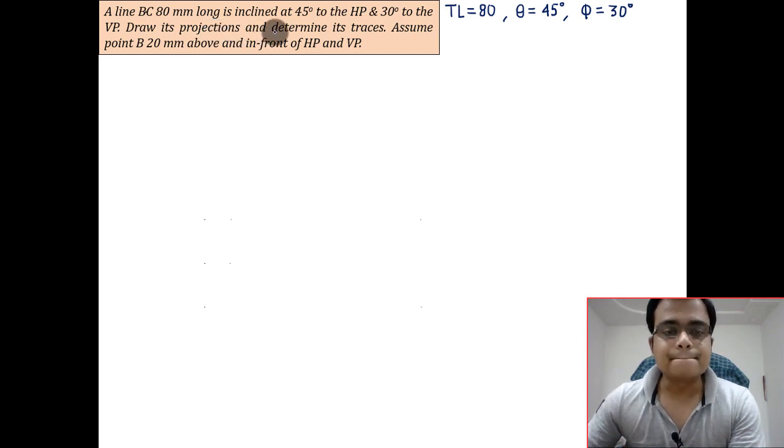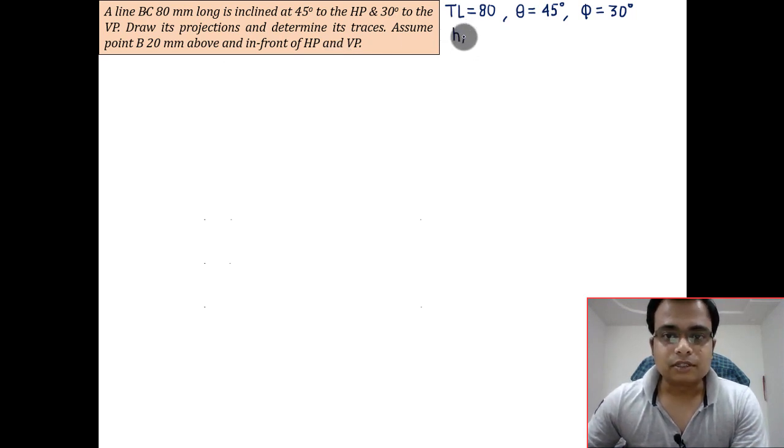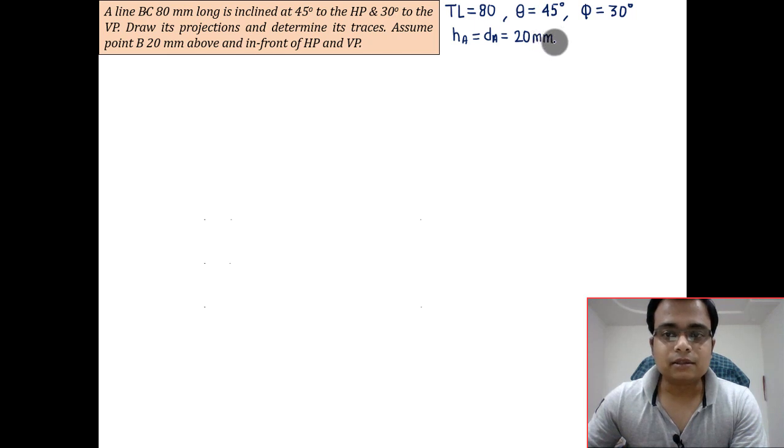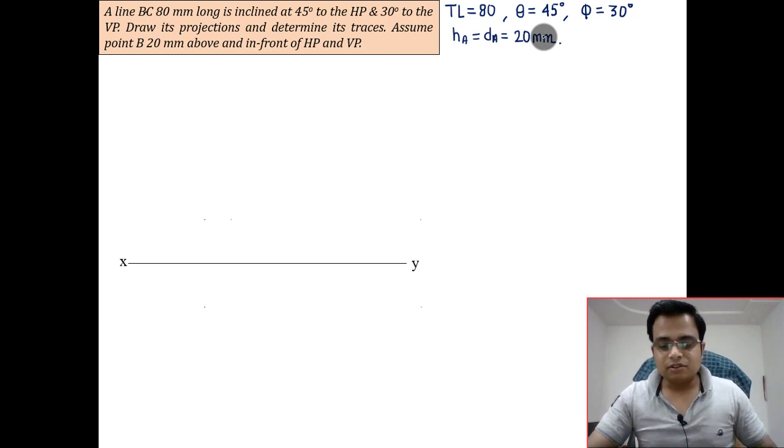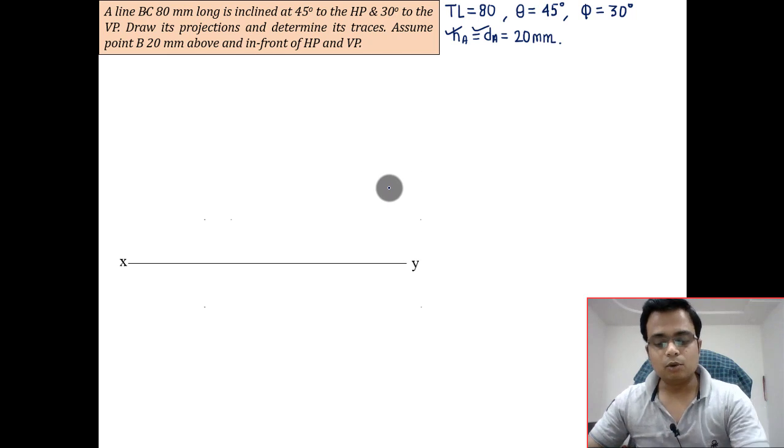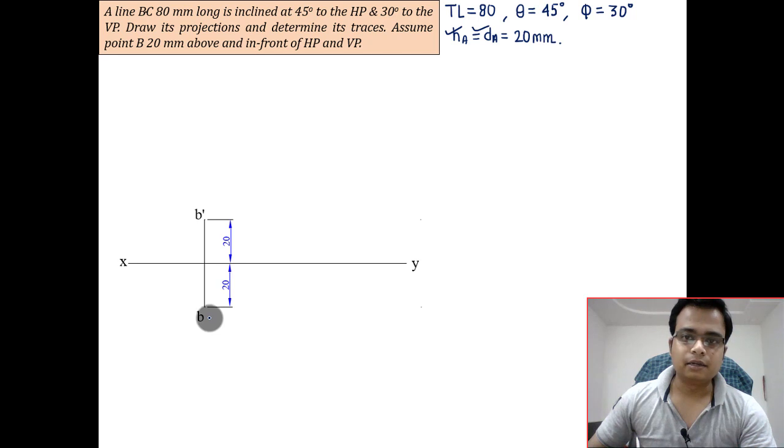We need to draw its projection and work out its traces, both HT and VT. Assume point B is 20 mm above and in front of HP and VP, so HA is equal to DA, both are equal to 20 millimeters. Let's quickly start by making the reference line. First, let me put H above and D below.